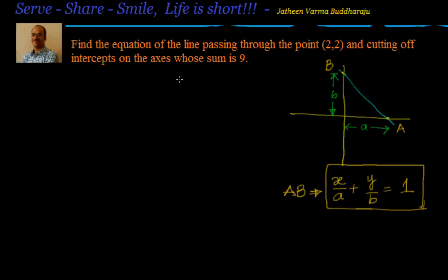Let's look at this problem and try to solve it together. Find the equation of the line passing through the point (2,2) and cutting off intercepts on the axes whose sum is 9. You know that the intercept on the x-axis is 'a' and the intercept on the y-axis is 'b', so we know that a plus b equals 9. That is the information we have been given.